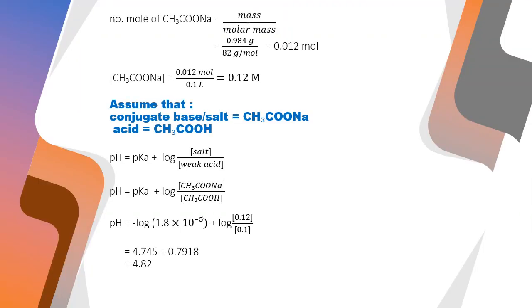First, we need to find the number of moles of sodium acetate and get 0.012 mol. Then we find the concentration of sodium acetate which is 0.12 molar.